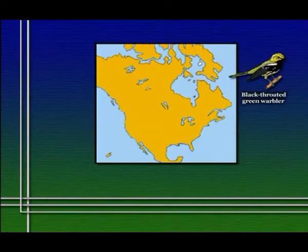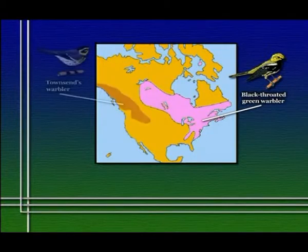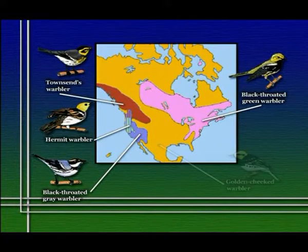Let me give you another example of how historical analysis can tell you something about not only the distribution of species, but maybe even about their evolutionary patterns. This example involves five very closely related species of birds — warblers. This group is called the black-throated green warbler complex, because the species with the broadest distribution is the black-throated green, which ranges from the northeastern United States up through central Canada.